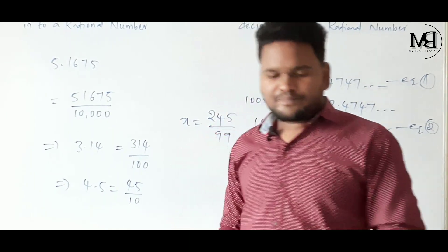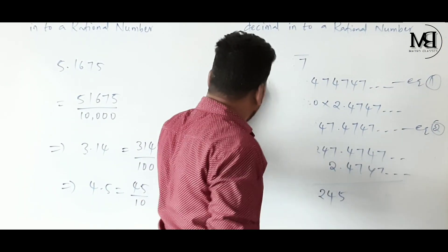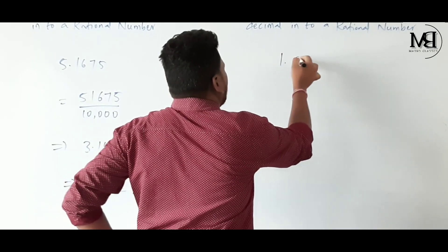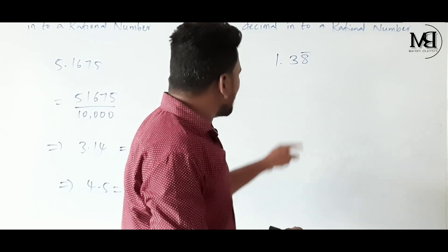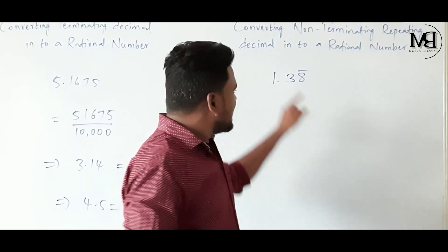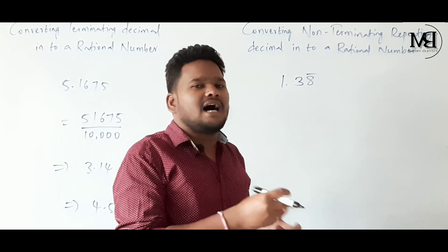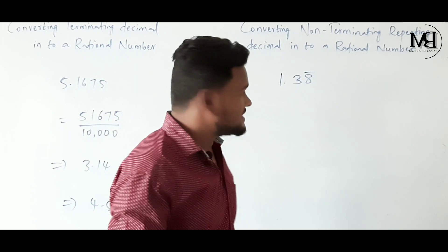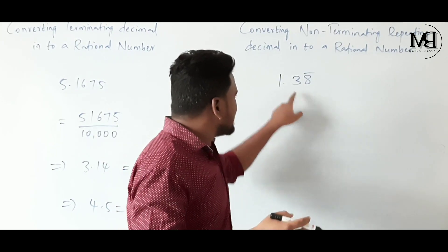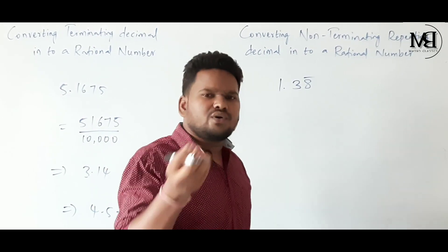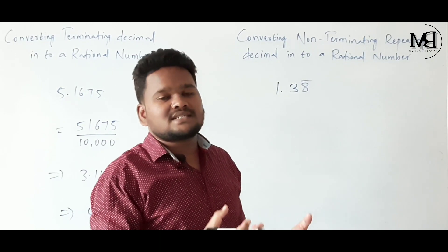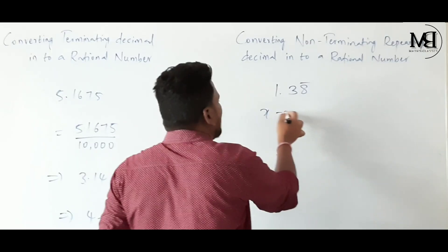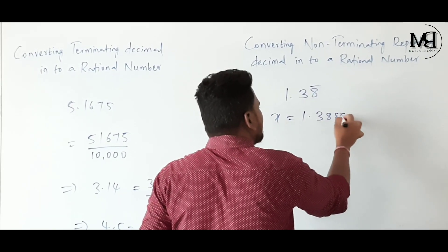Let us see one more example: 1.38 bar. This is a mixed recurring decimal — the last two examples were pure recurring decimals, but here 3 is not repeated; only 8 is repeated. Let us consider this decimal number as X. So X = 1.38̄ means 1.388 and so on.